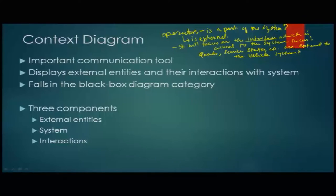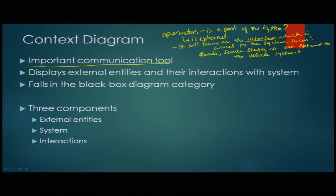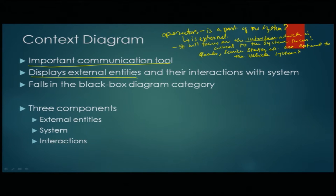Now we talk about the context diagram. This is the first tool we learn as part of systems engineering. It is an important communication tool — first and foremost a communication tool between users, systems engineers, designers, and everybody — to understand what is the system, the entities, the interactions, the boundaries, and the system environment. It effectively displays the external entities and their interactions with the system.